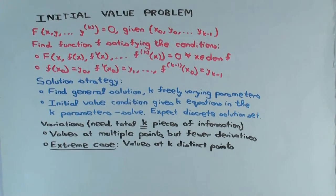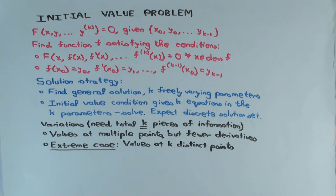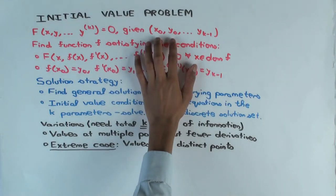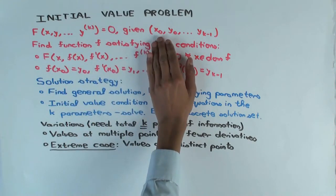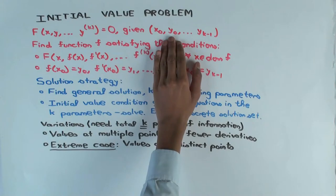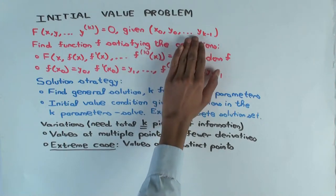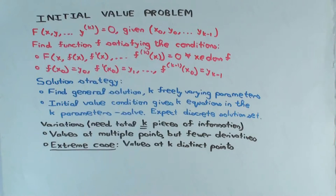This talk is going to be about something called an initial value problem. If you've seen the introductory video to differential equations, you have some idea of what an initial value problem is. We'll go over the definition. Basically, you have a differential equation and you additionally have a piece of information — it's a point. We're trying to find a function which satisfies this differential equation. The information we have is: you specify the point, the function value at the point, and the value of the first k minus one derivatives, where the differential equation has order k.